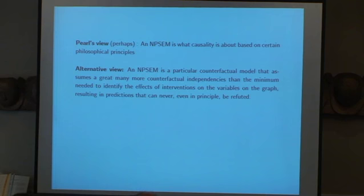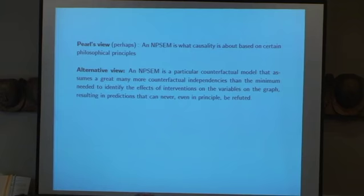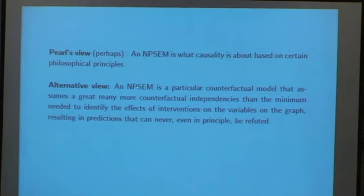Well, Judah's point of view is he wanted to do all causality, and he wanted to talk to physicists who have deep theories. So I purposely wouldn't allow any identification other than what you could do by doing an experiment. That was the whole goal. So Judah's view is NPSM is what causality is about based on certain philosophical principles. My alternative view is that NPSM is a particular counterfactual model. So there are many more counterfactual independencies than the minimum needed to identify the effects of intervention on the variables in the graph, resulting in predictions that can never, even in principle, be identified.